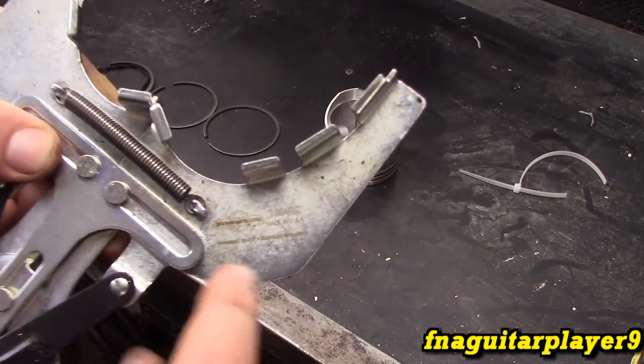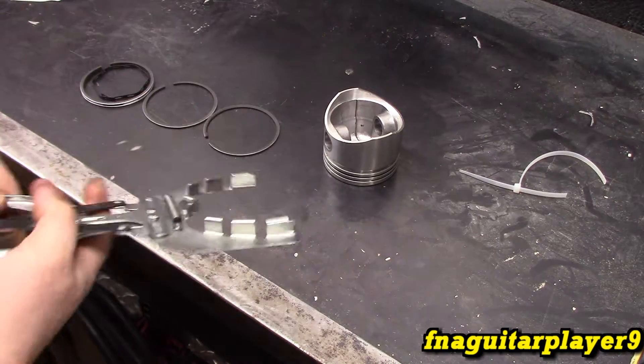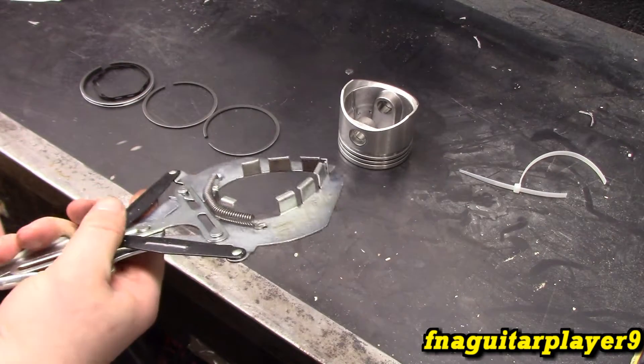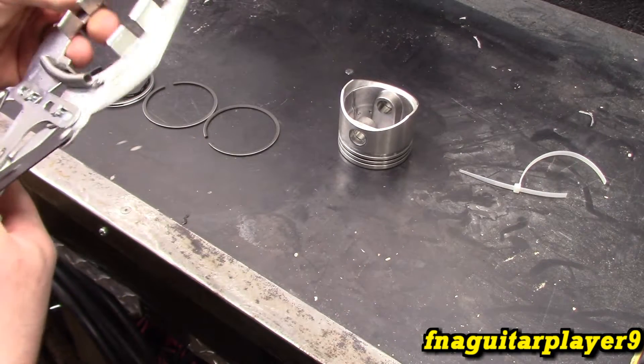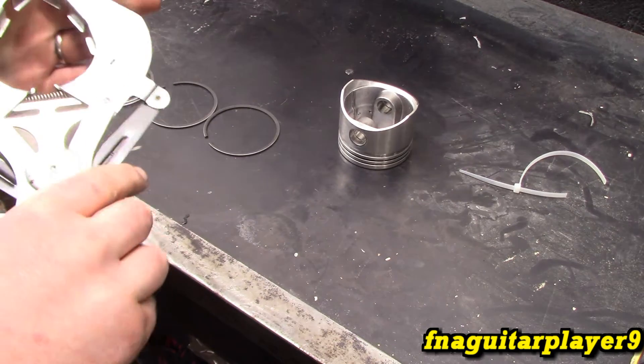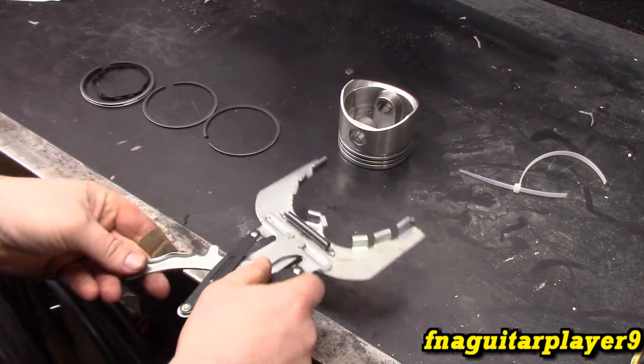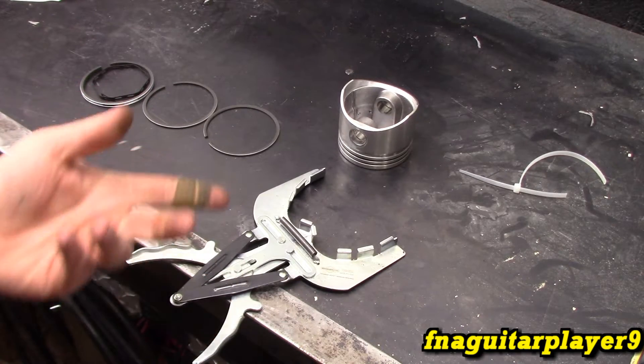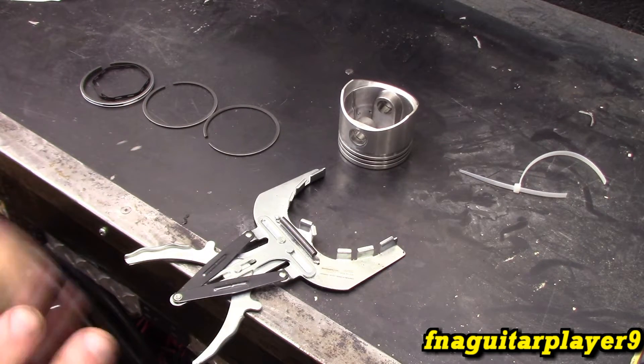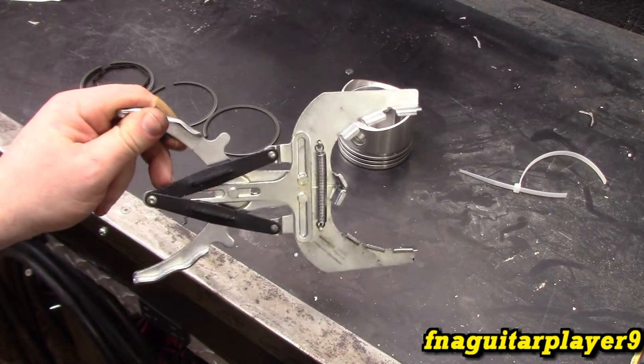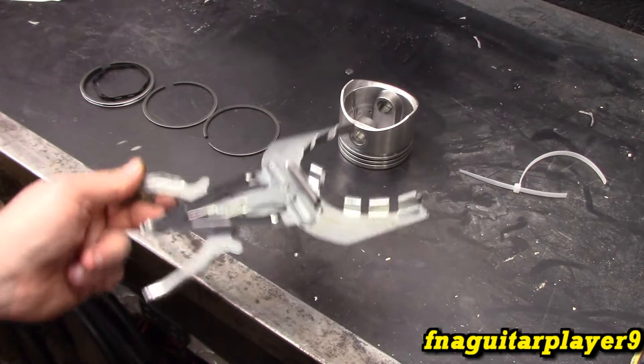This is for installing and removing piston rings. I've been told before that I should use it but never really saw the importance until I started using it. Then I decided I'll never go back. If I could change things, this would be one of the first tools that I bought when I first started getting into small engine repair.